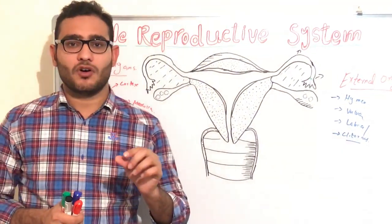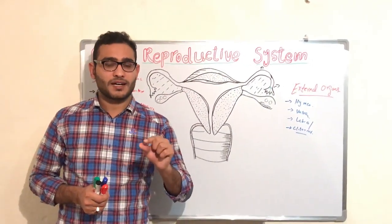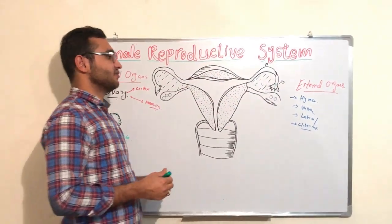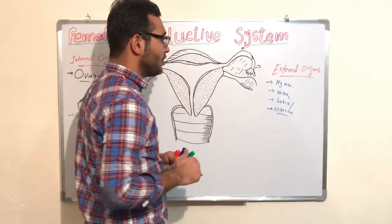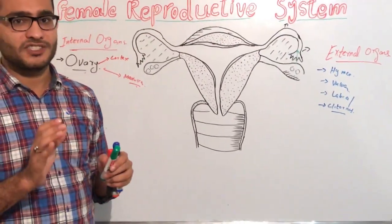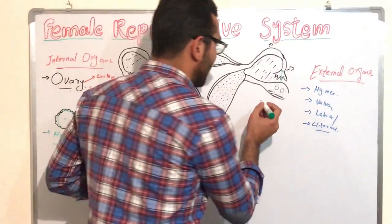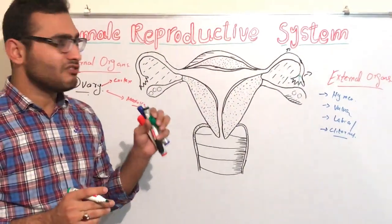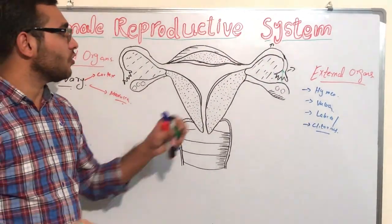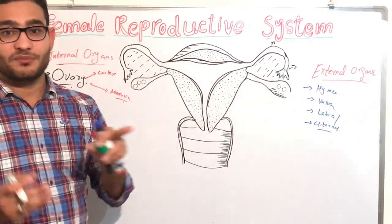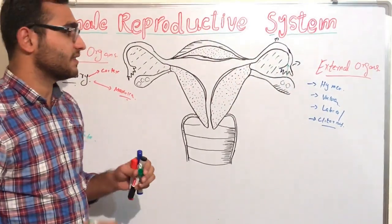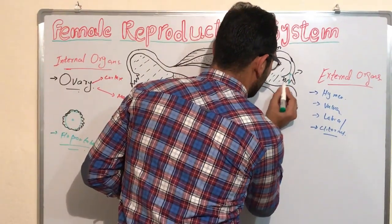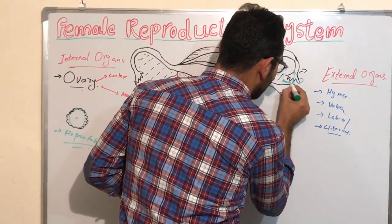The fallopian tube is made up of simple columnar ciliated epithelial tissue. The reason for this is that the ovum is non-motile — it cannot move by itself. So for the movement of the ovum we need cilia. The ovum will enter into the fallopian tube with the help of the fimbriae.